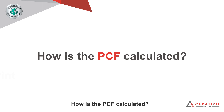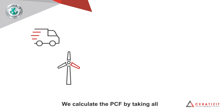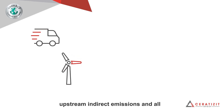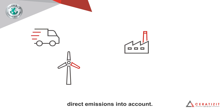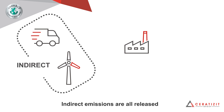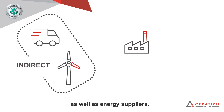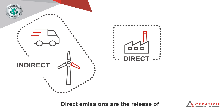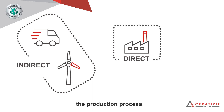How is the PCF calculated? We calculate the PCF by taking all upstream indirect emissions and all direct emissions into account. Indirect emissions are all released gases along the upstream supply chain, as well as energy suppliers. Direct emissions are the release of climate-damaging gases within the production process.